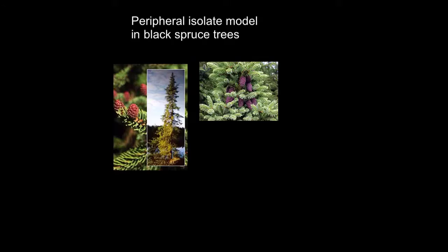Another example of allopatric speciation, and an example of the peripheral isolate model, has to do with black and red spruce trees and their divergence. Black spruce and red spruce trees were once all black spruce trees. Studies proved this by matching mitochondrial DNA and found nothing unique about red spruce trees — their DNA is a subset of black spruce trees. Also, the red spruce have low genetic diversity compared to the black spruce. But due to allopatric speciation during the Pleistocene era, some black spruce trees were isolated from the main population and experienced different selective conditions. Due to the different environment and conditions, red spruce trees developed among the isolated population.